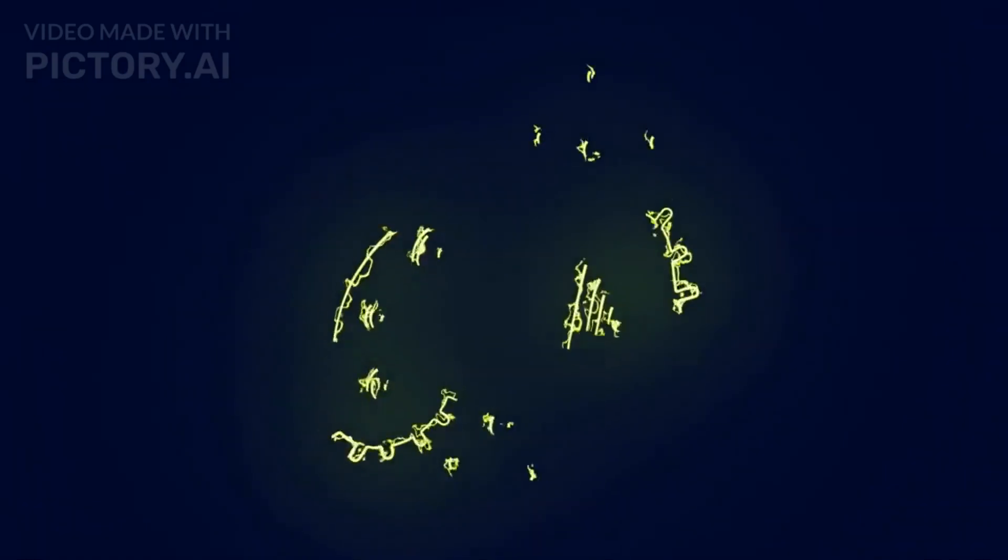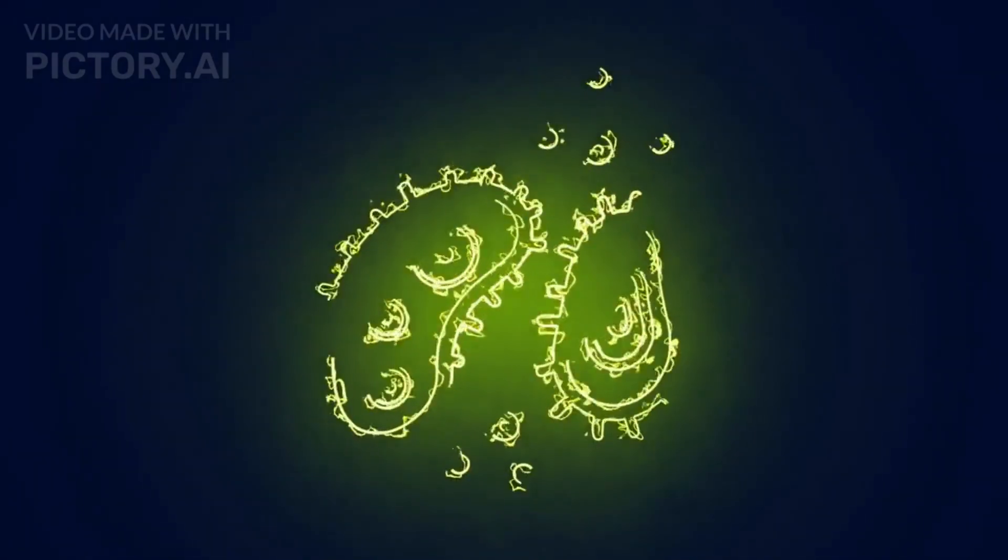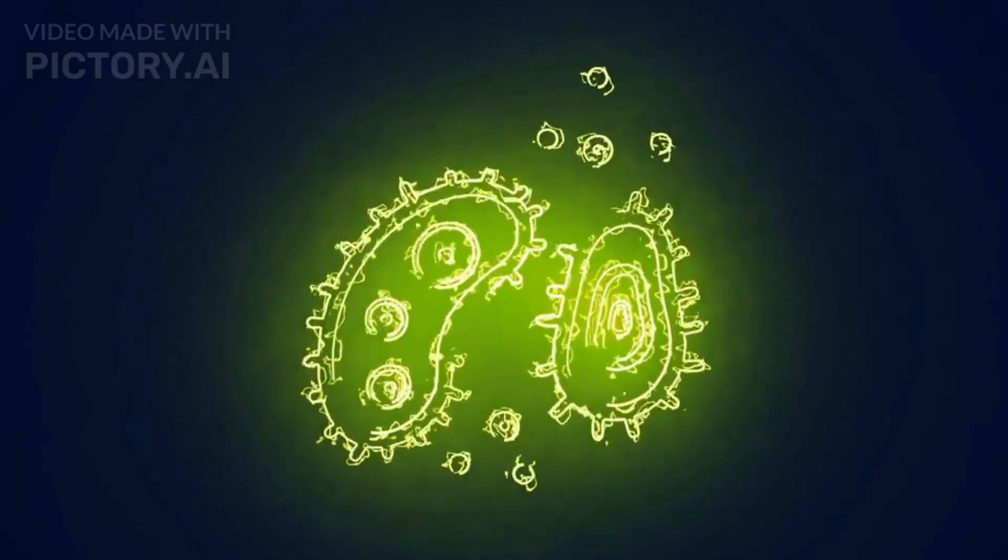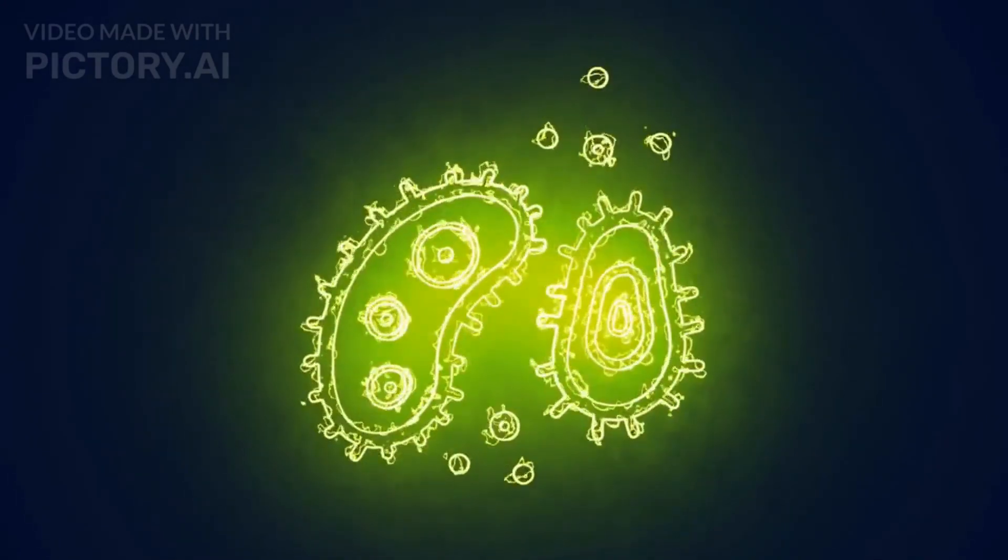Yes, you heard that right, 10 followed by 31 zeros. These tiny viruses play a crucial role in our ecosystem, maintaining the balance of bacterial populations.